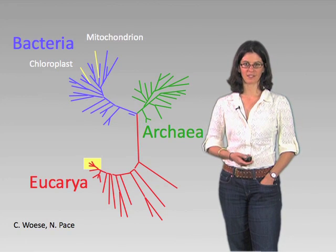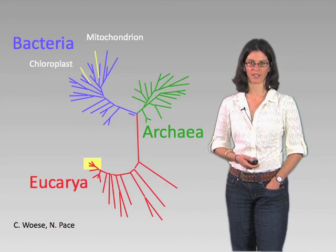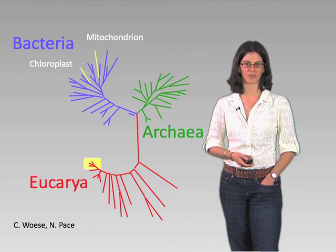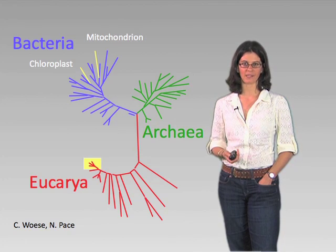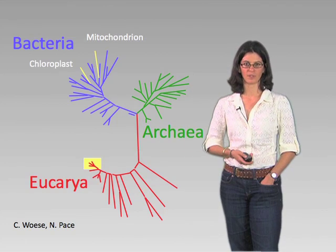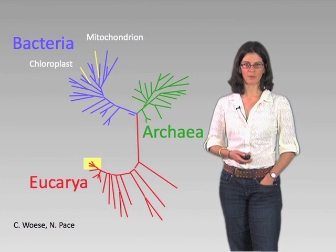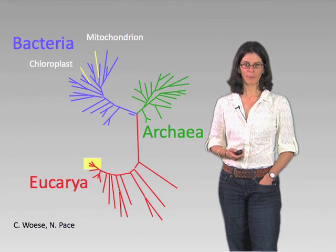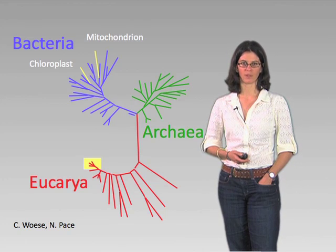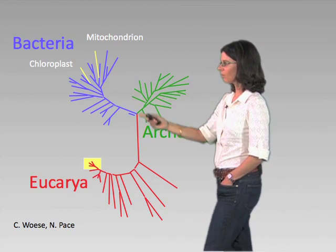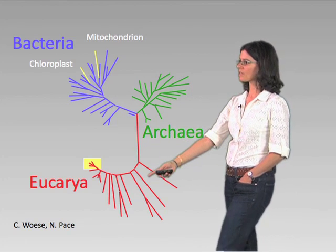One of the most important lessons in evolutionary theory was learned several decades ago from work by Carl Woese and his colleagues, including Norman Pace, who applied Woese's fundamental insights into the diversity of life to the natural world. Together they demonstrated very clearly that when we think about the diversity of life on the planet, we're really talking about a microbial world, whether we call these microorganisms bacteria, archaea, or even eukaryotes.